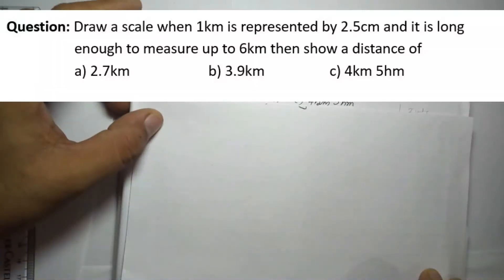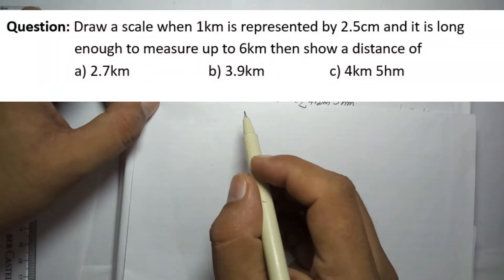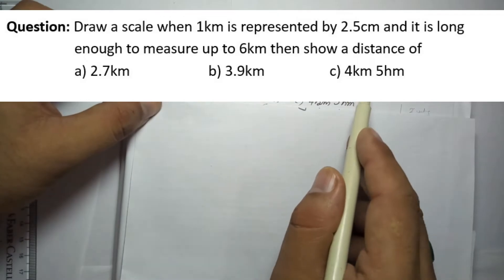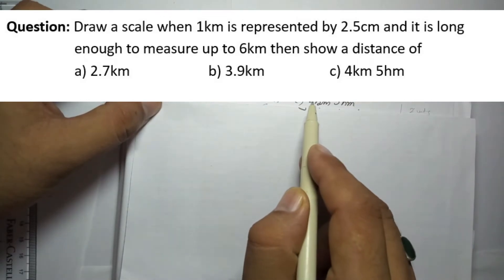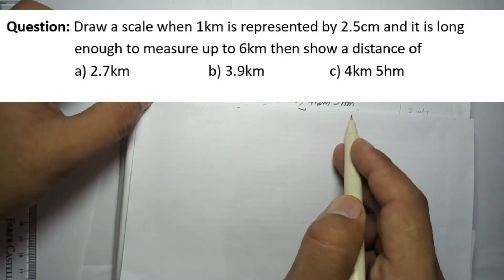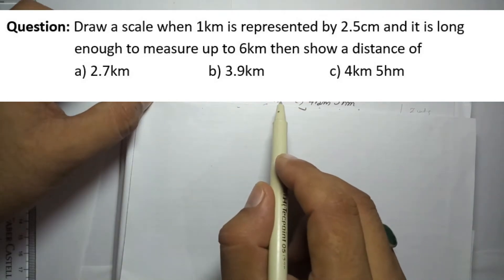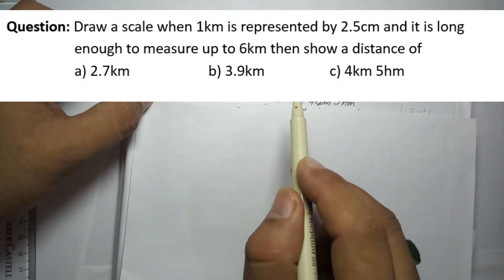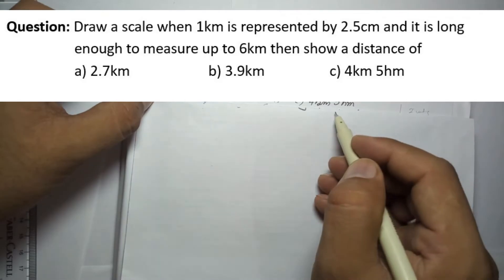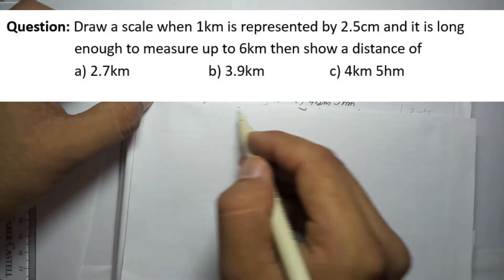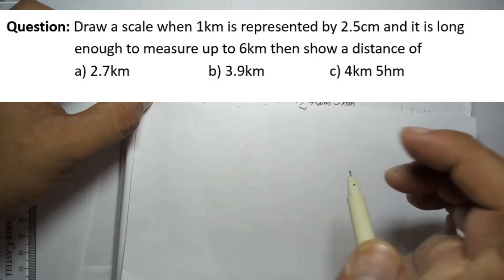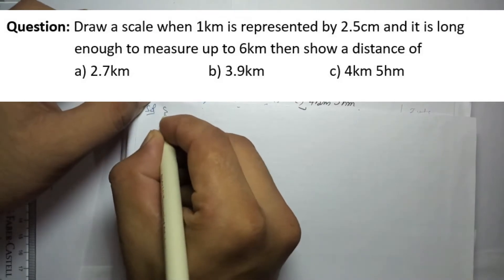We are going to solve a problem on the topic of scales. The problem states: draw a scale when 1 kilometer is represented by 2.5 centimeters, long enough to measure up to 6 kilometers, then show distances of 2.7 km, 3.9 km, and 4 km 5 hectometers. Since all three values involve two units only, we need to draw a plane scale.